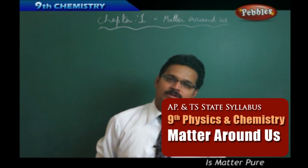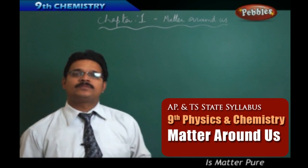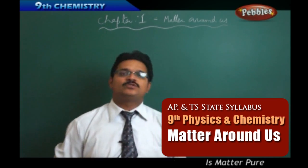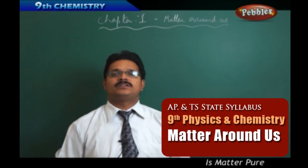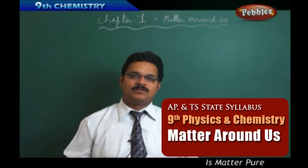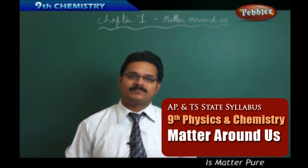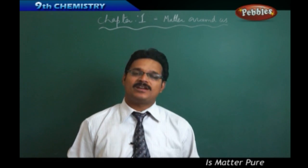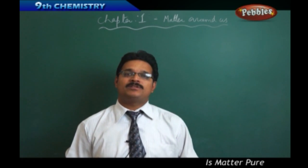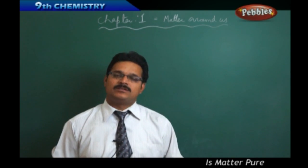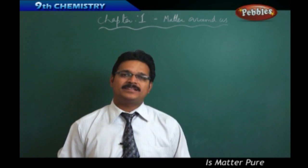Good morning, welcome to Chemical World. Today we discuss Chapter One: Matter Around Us. In our daily life we see so many things around us, like human beings, your friends, parents, different objects like books, bags, tables, vehicles. We also see other types of things like metals, non-metals, acids, bases, synthetic and natural substances.